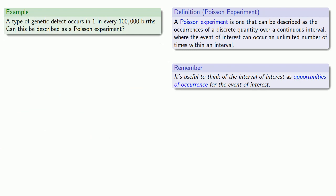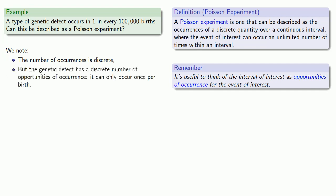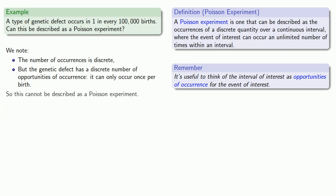Or how about this? A type of genetic defect occurs in one in every 100,000 births. Can this be described as a Poisson experiment? We note that the number of occurrences of the genetic defect is discrete, but the genetic defect has a discrete number of opportunities of occurrence — it can only occur once per birth. And so this cannot be described as a Poisson experiment.